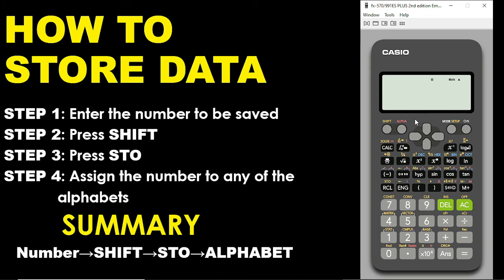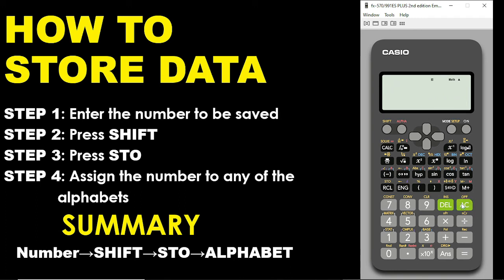Whatever you do, the number has been stored in A. Let's say I want to store 123456789 — you go through the same steps: enter the number, press Shift, press Store above the 7, then assign a letter. Maybe I want to assign X to it — so you press X — and it has been stored. You can put the calculator off and bring it on, and the number is still there in X.